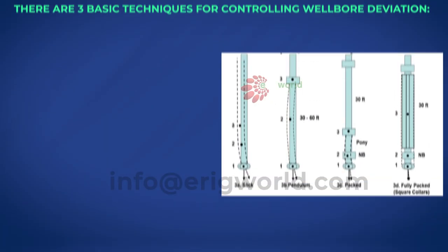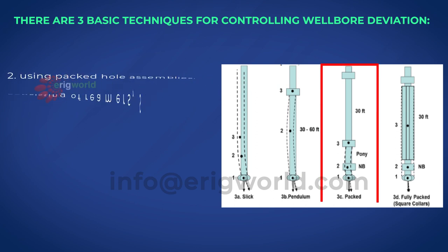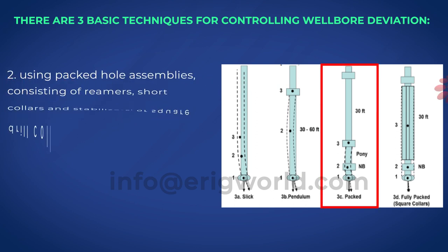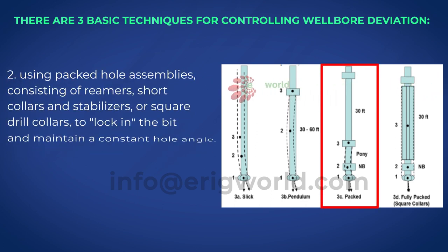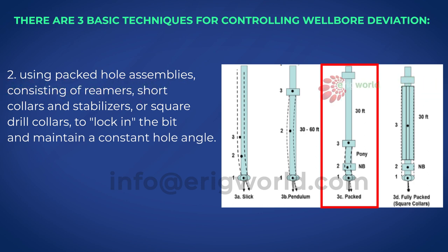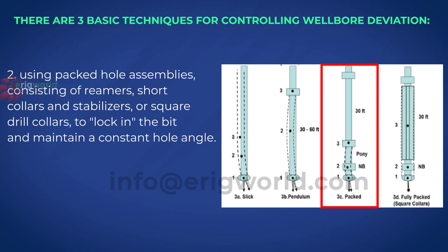Technique 2: Using packed hole assemblies consisting of reamers, short collars, and stabilizers, or square drill collars, to lock in the bit and maintain a constant hole angle. A disadvantage of using a packed assembly is that if the well has sharp dog legs, this assembly is difficult to pull out.